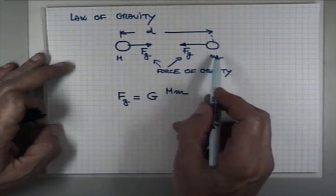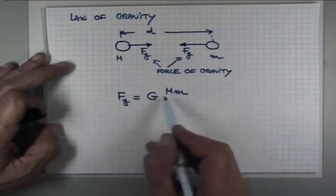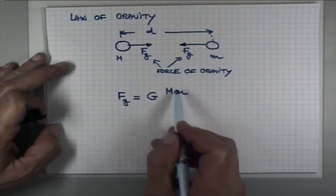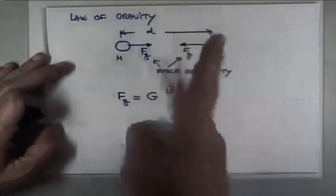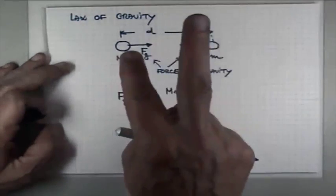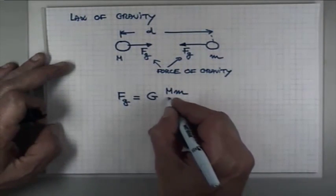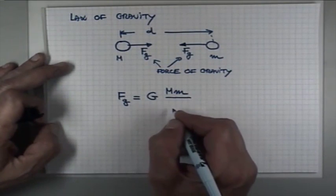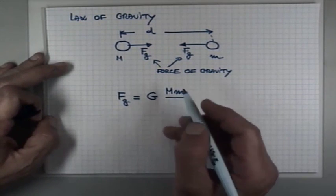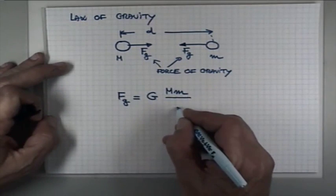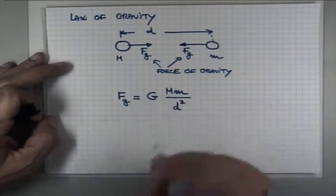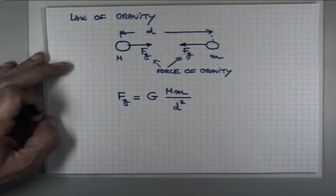And it has to be proportional to each mass. So the masses have to show up in the product. The symmetry of the situation requires that the masses appear in the product. And then the force of gravity decreases with the distance between the objects as the distance squared.